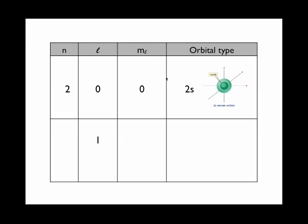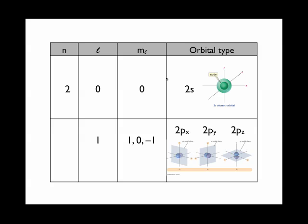But in the N equals 2 quantum shell there are also another value of L and that is 1. If L equals 1 then M sub L can have three values: 1, 0, and minus 1. And these describe the p orbitals.